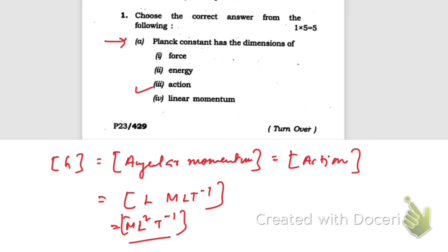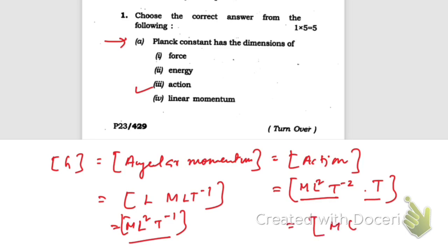If you find the dimension of action — action is energy multiplied by time — energy is equivalent to work done, which is force times displacement: ML²T⁻². Multiplied by time T, that gives ML²T⁻¹. So this is the same dimensional formula as Planck's constant, confirming the correct option is action.